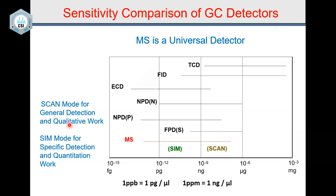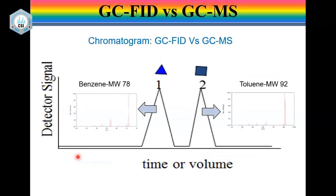Generally, the scan mode is used when you want to get a full spectrum — you use that in qualitative analysis. SIM mode you use in quantitative analysis. I will talk about what qualitative analysis and quantitative analysis mean; there is a very interesting definition as I move to the next slide.